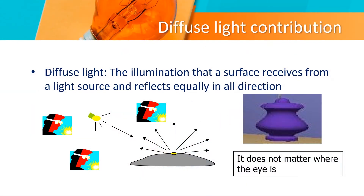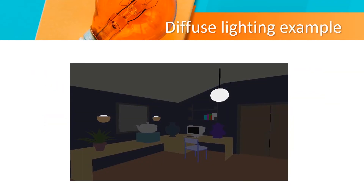Diffuse Light Contribution. Diffuse light is the illumination that a surface receives from a light source and reflects equally in all directions. It does not matter where the eye is. A diffuse lighting example is given below.